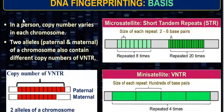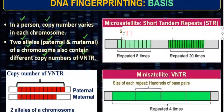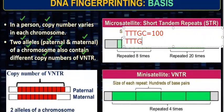In a person, copy number varies in each chromosome. The two alleles — paternal and maternal — of a chromosome contain different copy numbers of VNTR. For example, consider the sequence T-T-G-C. This is being repeated 100 times in my mother's DNA, but 170 times in my father's DNA. So I am the hybrid of my mother and father, and I have two chromosomes — half of my DNA is from the paternal side and half from the maternal side.